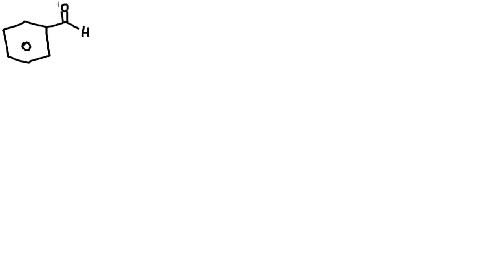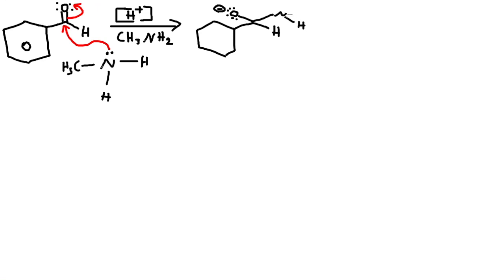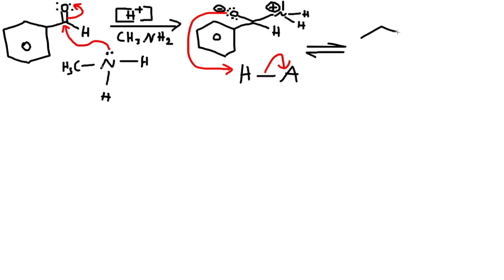Let's work on the mechanism. It's quite lengthy but fairly simple. We start with an aldehyde, react it with an acid and a primary amine. The first step: the amine always attacks first. The amine goes to the carbon and exposes the electrons to oxygen. The outcome looks like this: oxygen has a negative charge and nitrogen has a positive charge — it is lacking electrons. Then the acid comes in, grabs a hydrogen, and kicks off the conjugate base. This is a reversible reaction, so we draw two arrows.